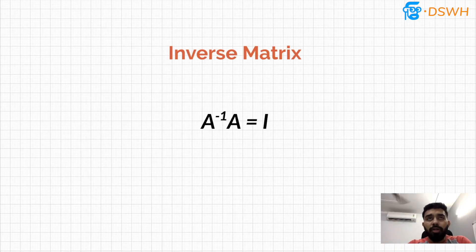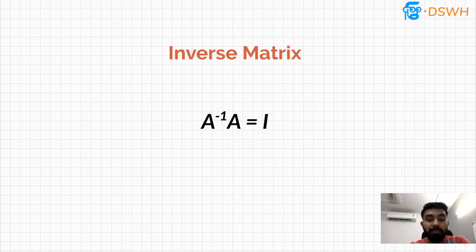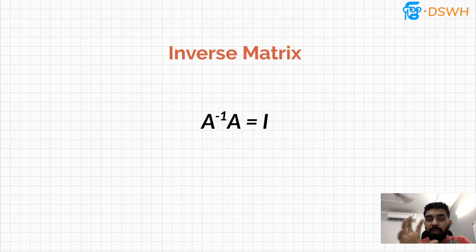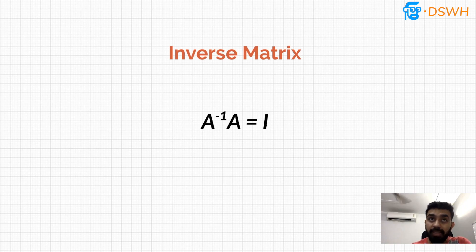Now an important topic: the inverse matrix. The inverse of matrix A is denoted as A⁻¹. It is the matrix that results in the identity matrix when multiplied by its original matrix, so A⁻¹ · A = I. This means if you transform a space by applying matrix A, you can get back to the original state by multiplying by A⁻¹ — it cancels out the transformation. This concept is applied in convolutional neural networks where we try to transform and enhance features in images.